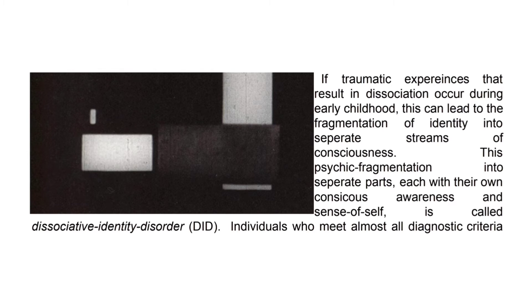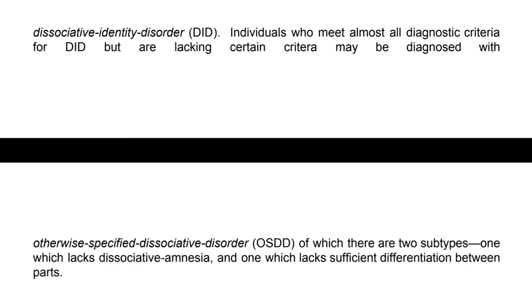If traumatic experiences resulting in dissociation occur during early childhood, this can lead to the fragmentation of identity into separate streams of consciousness. This psychic fragmentation into separate parts, each with their own conscious awareness and sense of self, is called dissociative identity disorder. Individuals who meet almost all diagnostic criteria for DID but lack certain criteria may be diagnosed with otherwise specified dissociative disorder, which has two subtypes: one lacking dissociative amnesia and one lacking sufficient differentiation between parts.